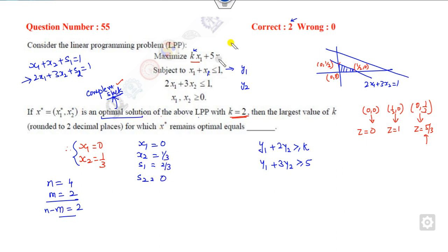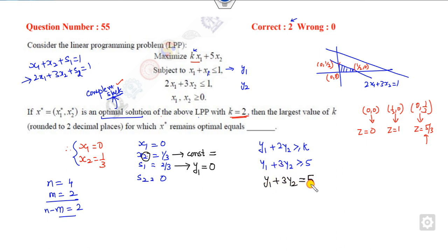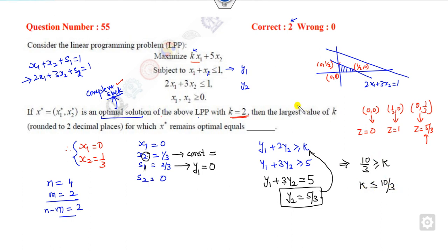Now apply the complementary slackness condition. Since s1 is present in the basis, the corresponding primal variable is zero. The variable x2 is present, so the second constraint is satisfied as equality. Since y1 is zero, substituting gives y2 as 2/3. Substituting this into the dual constraint: 10/3 is greater than or equal to k. Since we need the largest value of k to two decimal places, the right answer is k equals 3.33.